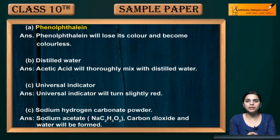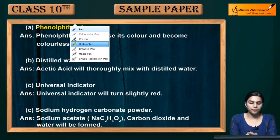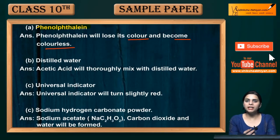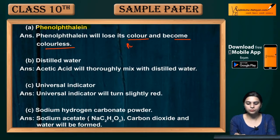Phenolphthalein is an indicator that shows acid-base reactions. When phenolphthalein is added to acetic acid, it will lose its color and become colorless in an acidic medium — changing from purple to colorless.